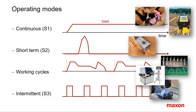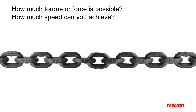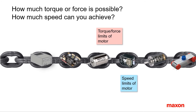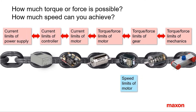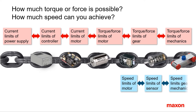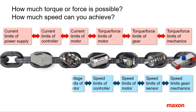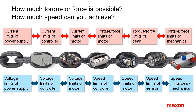Cycles may also vary, as in a strapping tool. On-off operation is a special case of cyclic operation. The weakest link in the drive chain limits the power available at the load. Hence, it's not only the torque and speed limits of the motor — the limited torque capabilities of the gearhead or mechanical system must be considered as well, or the current limit of motor, controller, or power supply. Similarly, the achievable speed can be limited by other components such as sensor, gears and mechanics, or controller.